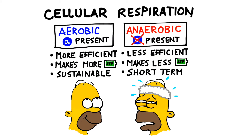There are two major categories of cellular respiration: aerobic and anaerobic. Aerobic respiration occurs when oxygen is present. We consider this type of respiration to be more efficient because it makes more ATP and it's more sustainable. Anaerobic respiration occurs when there is not enough oxygen present. We consider it to be less efficient because it makes less ATP and it can only be used in the short term.